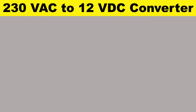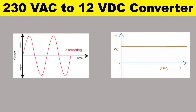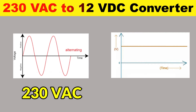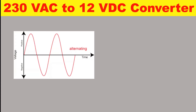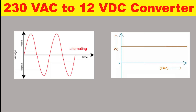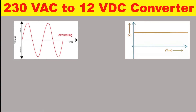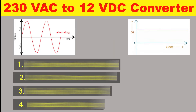Today in this video I am going to explain how 230 volt AC power supply can be converted into 12 volt DC power supply. The process of converting AC power supply into DC power supply can be divided into four parts.